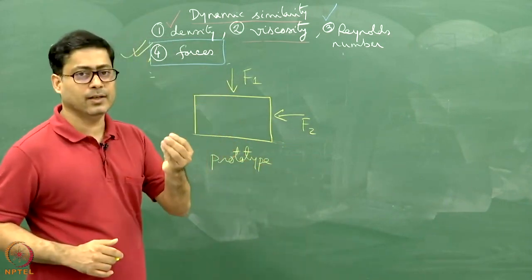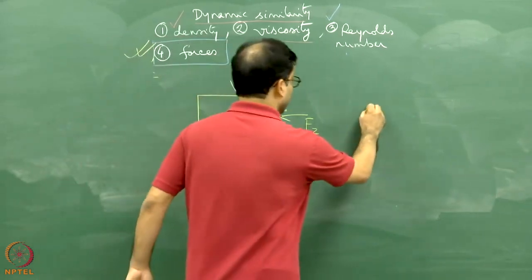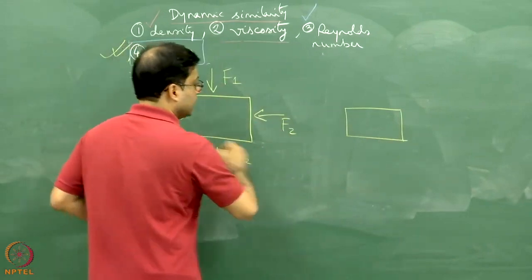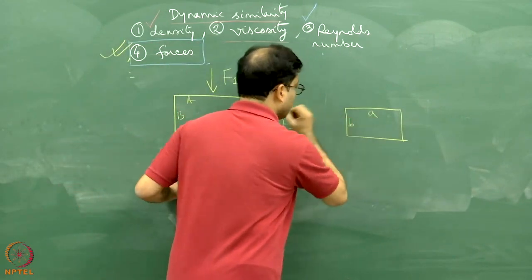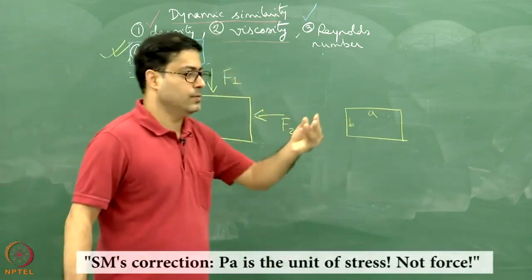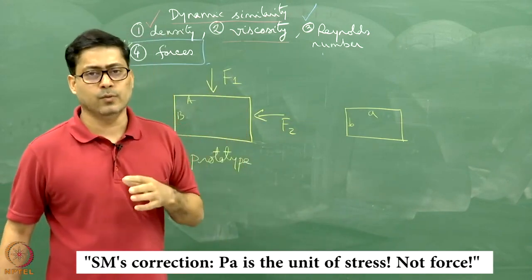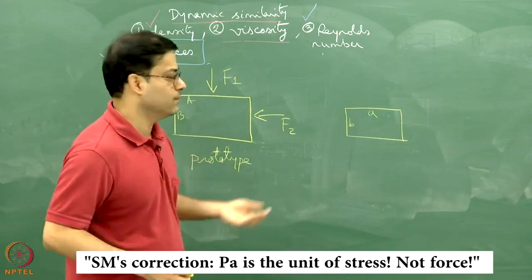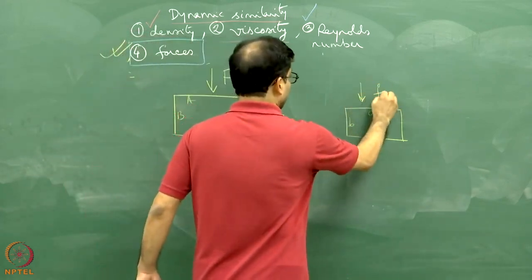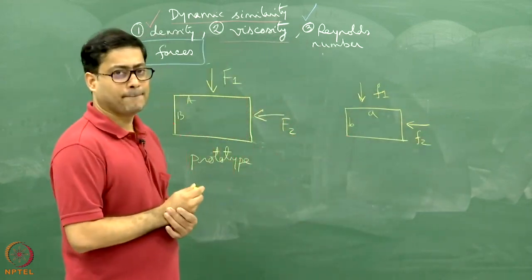We want to simulate this deformation in the laboratory, so we take a softer material with much lower viscosity than the real rock and maintain geometric similarity — meaning capital A/B equals small a/b. This mega-pascal force is not required to deform a soft clay material, and it is unrealistic. We need a small amount of force to deform a clay material.